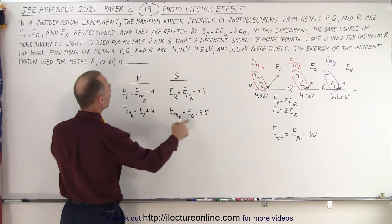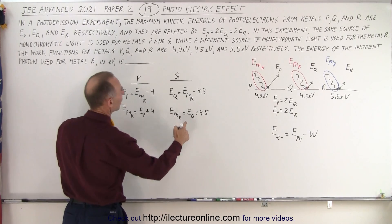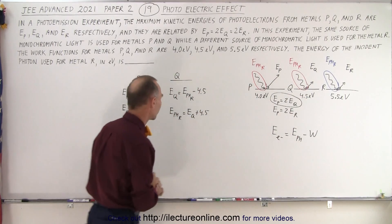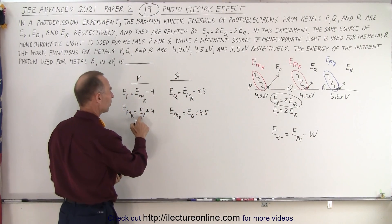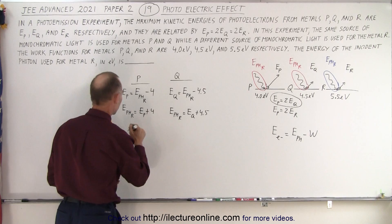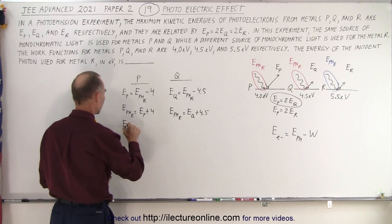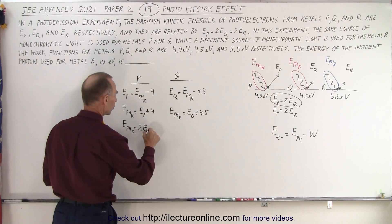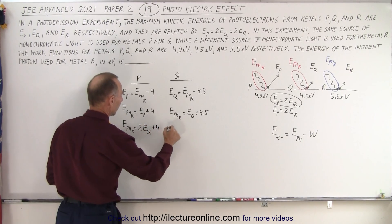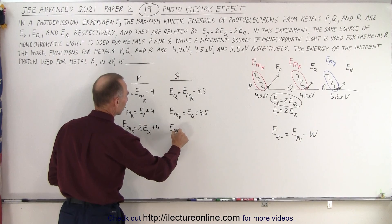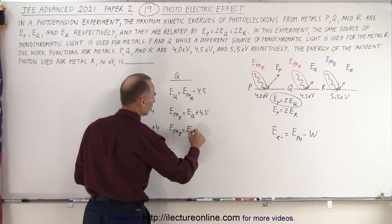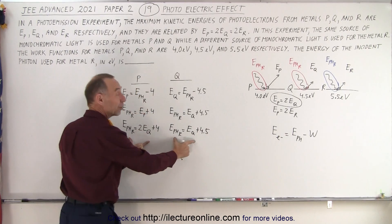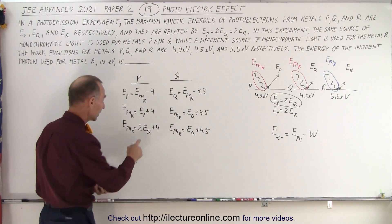Since E_p = 2·E_q, I can substitute to get E_photon_red = 2·E_q + 4. Combined with E_photon_red = E_q + 4.5, we can now set these two expressions equal to each other and solve for E_q.